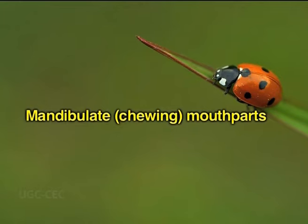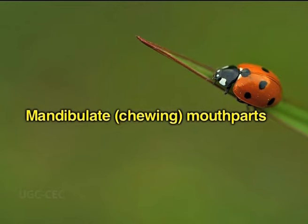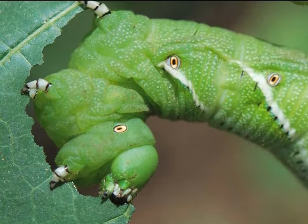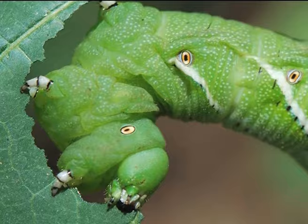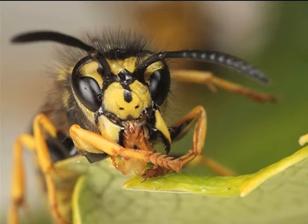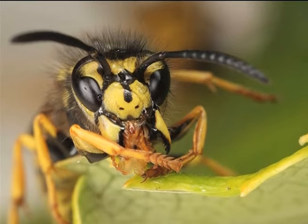First are mandibulate mouth parts, that is chewing mouth parts. Chewing insects have two mandibles, one on each side of the head. The mandibles are positioned between the labrum and maxillae. They are typically the largest mouth parts of chewing insects, being used to masticate — that is, to cut, tear, crush, or chew food items.